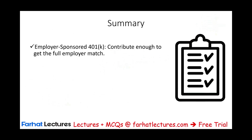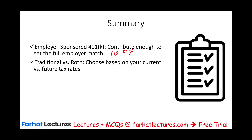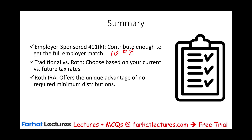Here's a quick summary: for employer 401k, contribute enough to get at least the full employer match — that's a 100% return immediately, plus a tax deduction. For traditional versus Roth, choose based on your current versus expected future tax rate. The Roth IRA offers the unique advantage of no required minimum distribution (RMD).